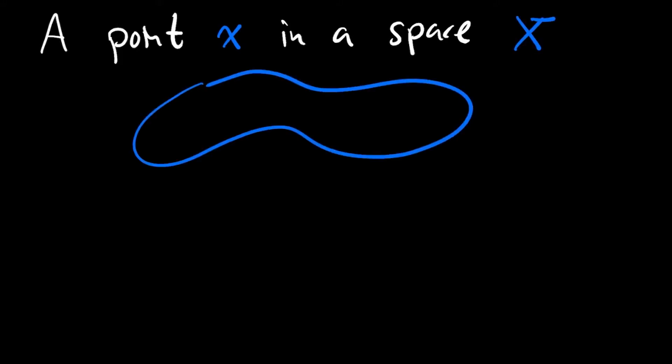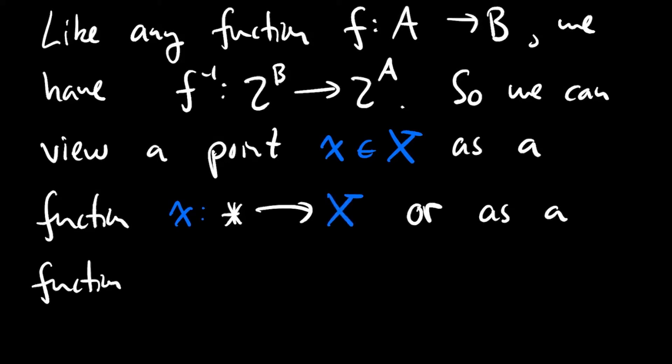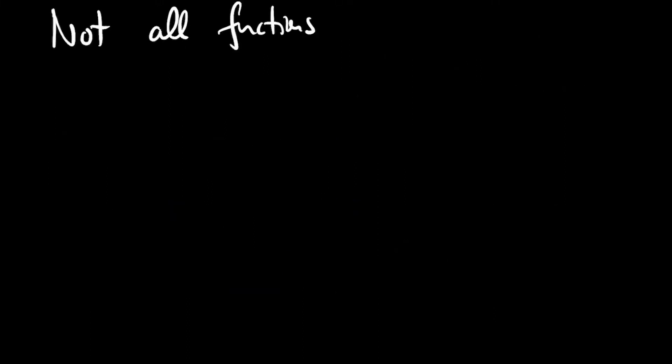So the first thing I want to say is that you should think of a point in a space X as a map from the one-point space into X. Now, like any function f: A → B, we have f^{-1}: 2^B → 2^A. So we can view a point as a function from the power set of X into the power set of the one-point set, which has two points in it, the empty set and the set consisting of the one-point. And let's just rename those. Let's rename the empty set zero and the set that contains the one-point one.